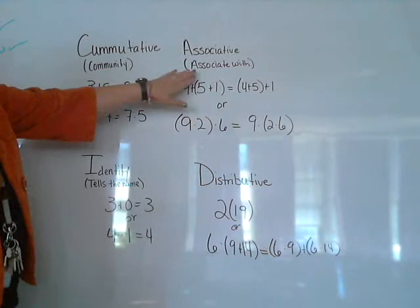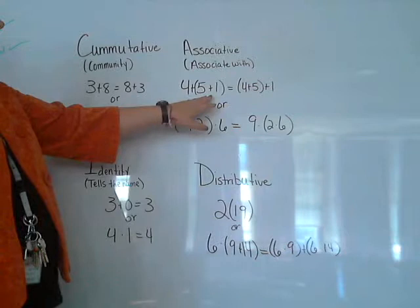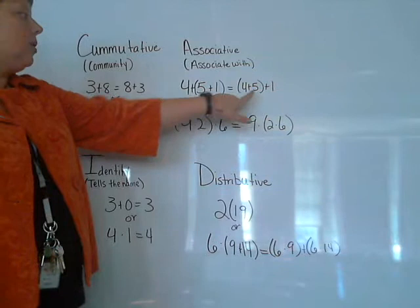Next we have the associative property, or you can think of it as associate with. So here we have 4 plus 5 plus 1 is also equal to 4 plus 5 plus 1. And you notice where the parentheses are.